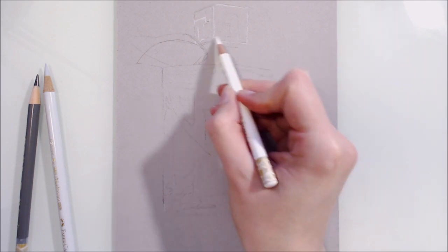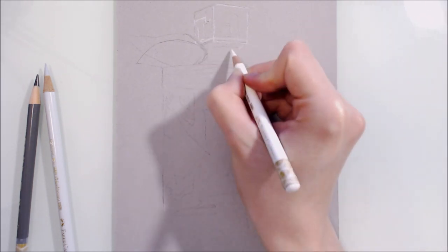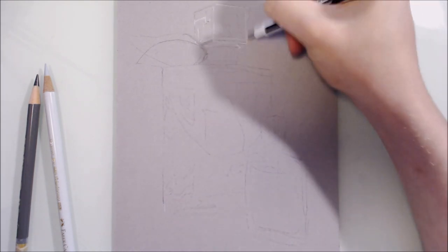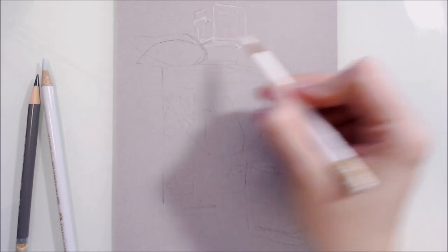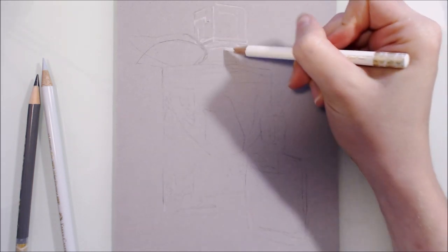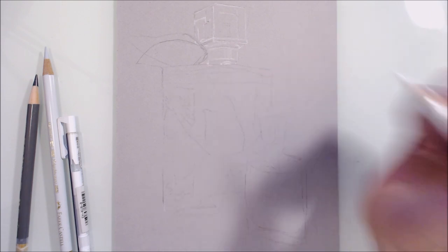But anyway, moving onto this tutorial, which is how to draw shiny things. My first idea when thinking of subject matter that contained both glass and metal elements was perfume bottles, but I had a hard time finding royalty free photos that exactly suited my needs, so I ended up taking my own.